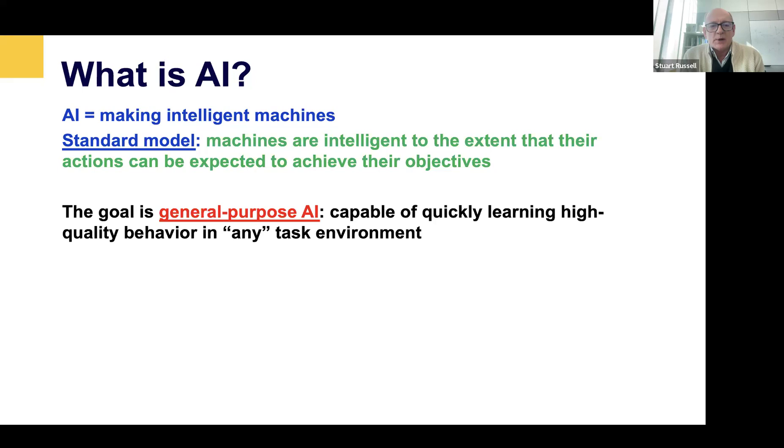The approach that won out is what we might call a more objective approach derived from notions of rationality and economics and philosophy, namely that machines are intelligent to the extent that their actions can be expected to achieve their objectives. I call this the standard model because it dominated AI really up until the present.